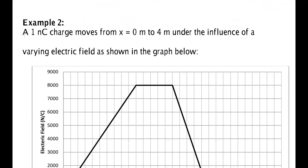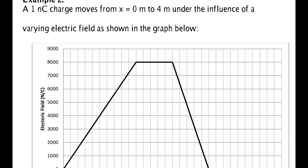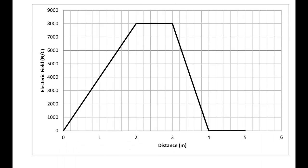Alright, another type of problem. You have a 1 nanocoulomb of charge that moves from 0 to 4 meters on the influence of a varying electric field. This time they give me a field with a graph. So in this case, I need to find the area under the curve. So I'm looking for finding this triangle here, this rectangle, and this other triangle. So 1, 2, 3 areas to add up.